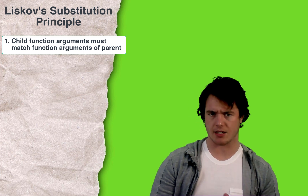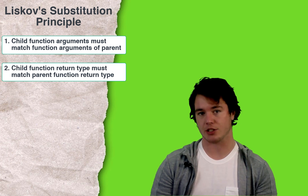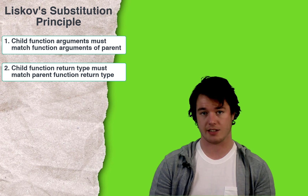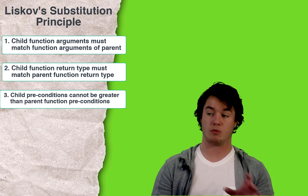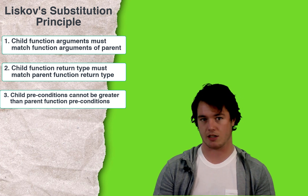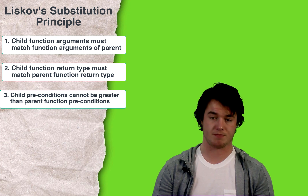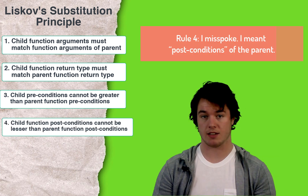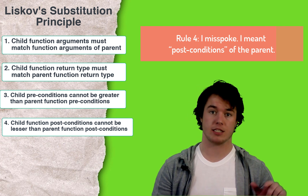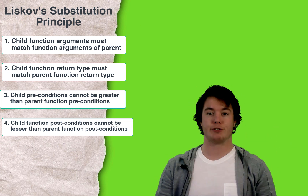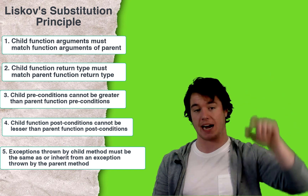Here are the five rules a child class must abide by when overriding parent behavior to enforce it is still substitutable with its parent. Number one: function arguments of the child class must match the function arguments of the parent class. Number two: the method return type must match the method return type of the parent class. Number three: the preconditions of a child class can be no greater than the preconditions of the parent class. Number four: the post conditions of a child function cannot be lesser than the post conditions of the parent function. Number five: when the child method throws an exception, it has to be the same as or a child of the exception thrown by the parent method.